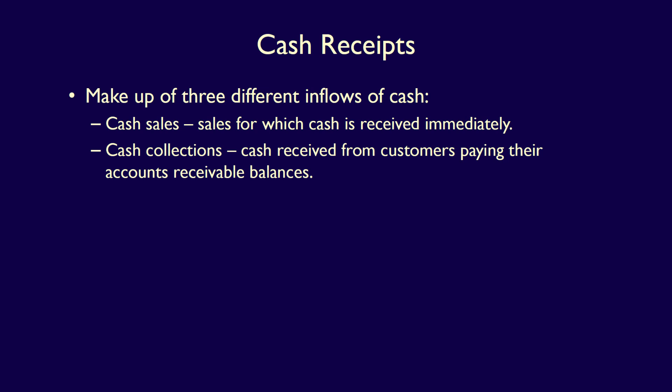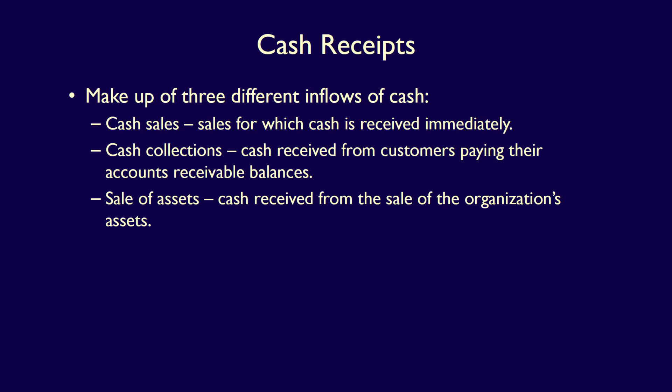For instance, if a wholesaler sells $12,000 of product to a customer on account and the customer does not pay for 60 days, when the customer does pay, it's considered a cash collection. Finally, we have cash inflows from the sale of assets. For example, if an organization sells old machinery for $6,000 cash or sells their investment in the shares of another corporation for $120,000 cash, both of these cash inflows are from the sale of assets other than inventory sales.